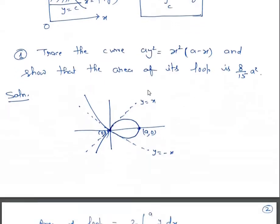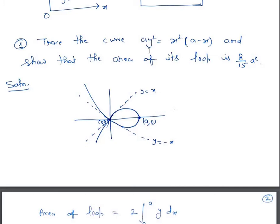The first example is to trace the curve ay² = x²(a - x) and show that the area of its loop is 8/15 · a². These are the two things we are supposed to do in this problem: first, trace the curve, and then find the area. Because I have already explained tracing of curves in detail, I won't write the steps here, but in an examination you must give the tracing steps.